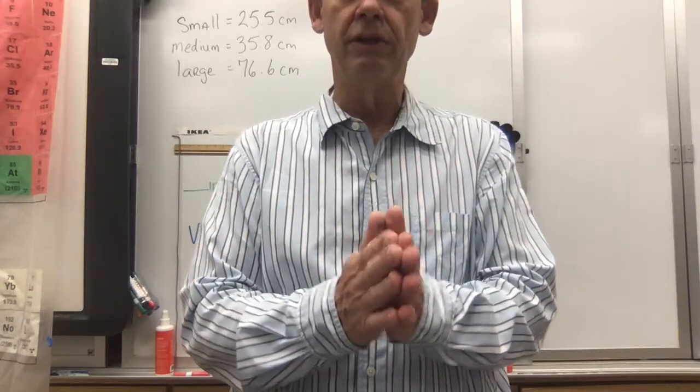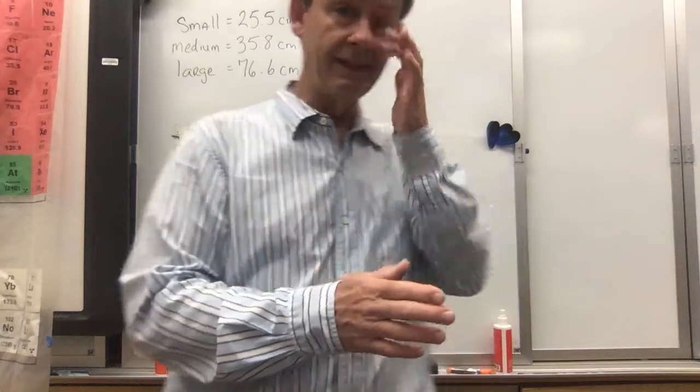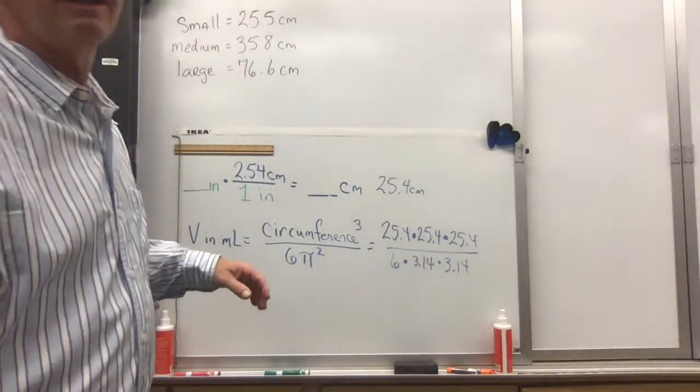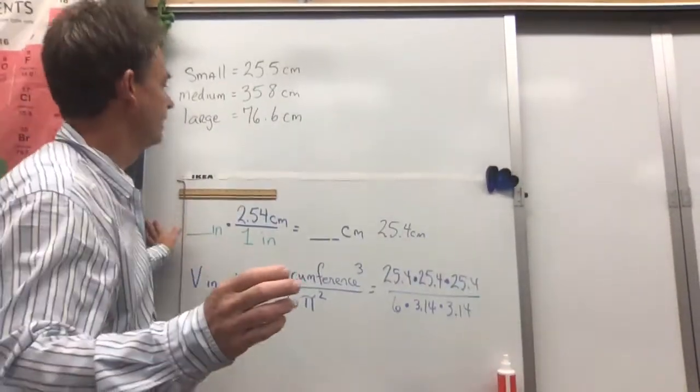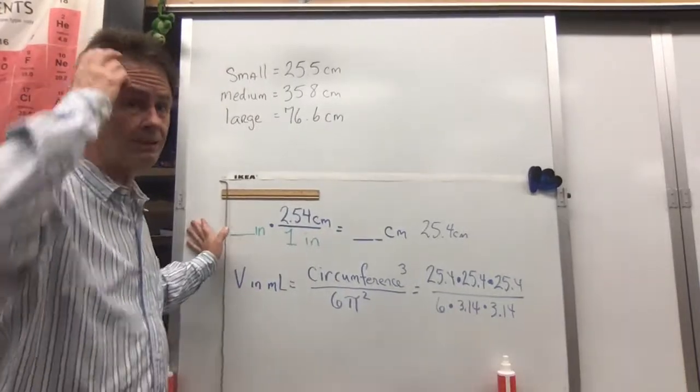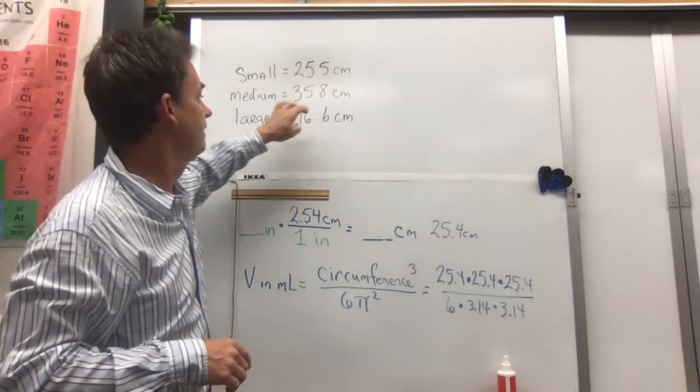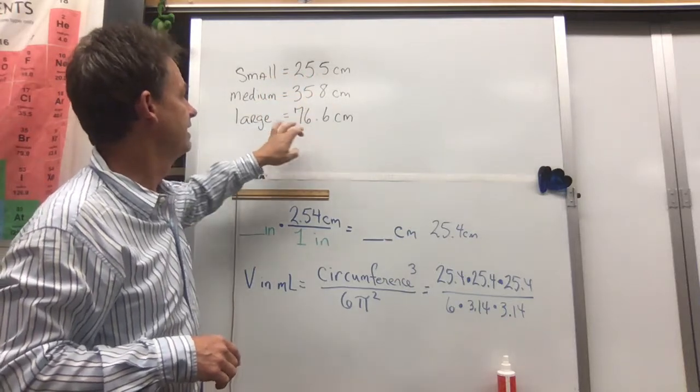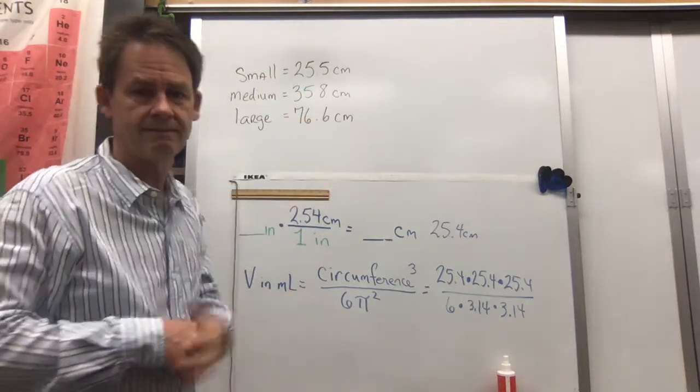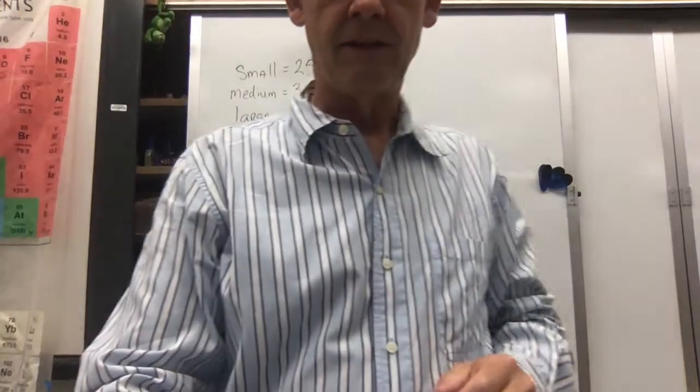Okay, preferable to do your own lab. If you need the numbers because you have issues at home trying to do labs, here are the numbers you use: 25.5, 35.8, 76.6. Okay, off you go.